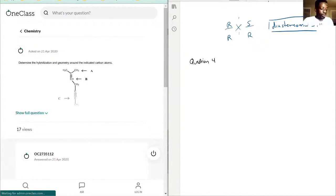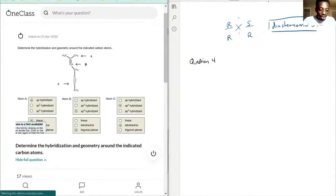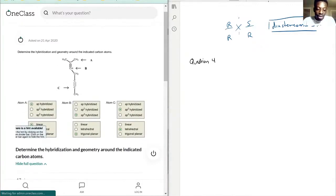This question is asking us to determine the hybridization and geometry around indicated carbon atoms. So what does it mean by hybridization? When I write down sp, sp2, and sp3, what does that mean?